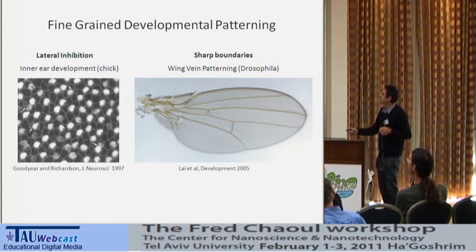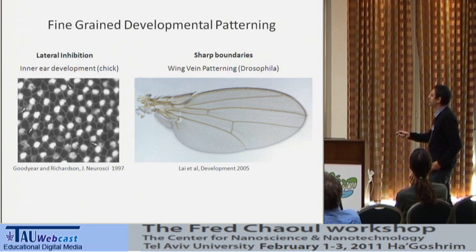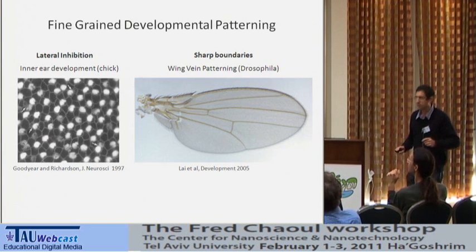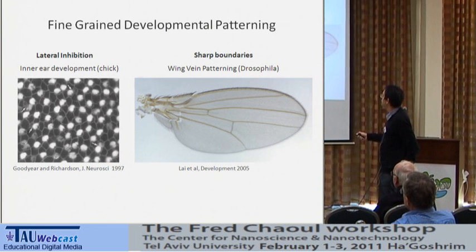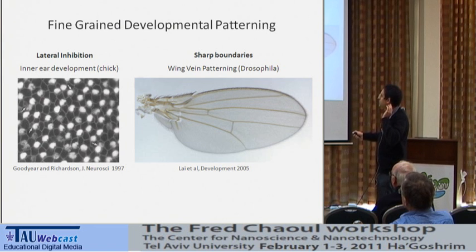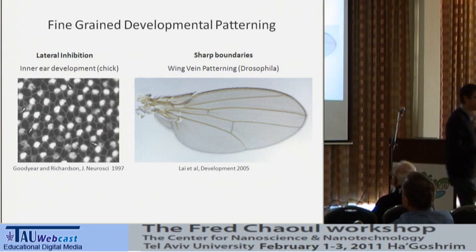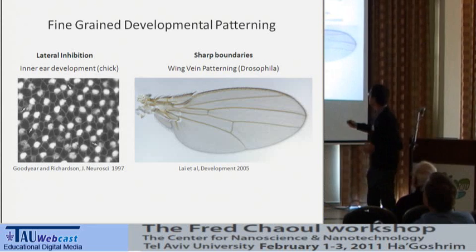On the left, you see the differentiation pattern during the development of the inner ear — in this case of a chick, but it's actually very similar to our own inner ear. You have this checkerboard-like pattern of differentiation. The white cells here are going to become the hair cells in the inner ear, and the dark cells that surround each of these white cells are supporting cells. This pattern arises from an initially uniform field of cells in a process called lateral inhibition.